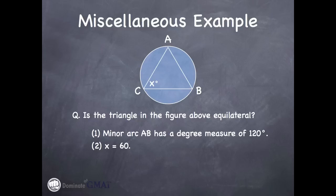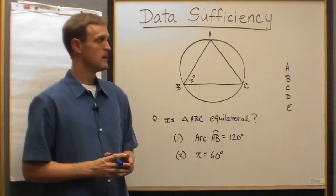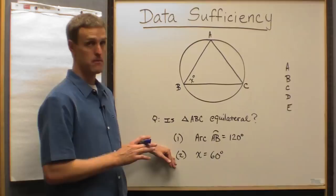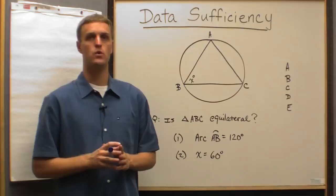You see here statements one and two, statement number one says that minor arc AB has a degree measure of 120 degrees, and statement number two says that X equals 60 degrees. You obviously want to look at these things one at a time, but at some point it dawns on you that you've been given the same information.